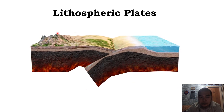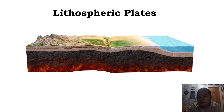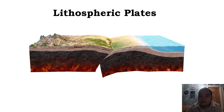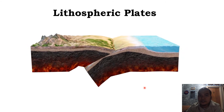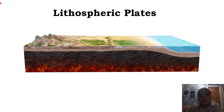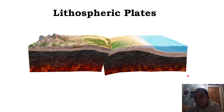Here is an example of lithospheric plates. There are two kinds: a continental plate, which lies over the continent, and an oceanic plate, which lies beneath the ocean. These are the types of lithospheric plates, and this is how they look.